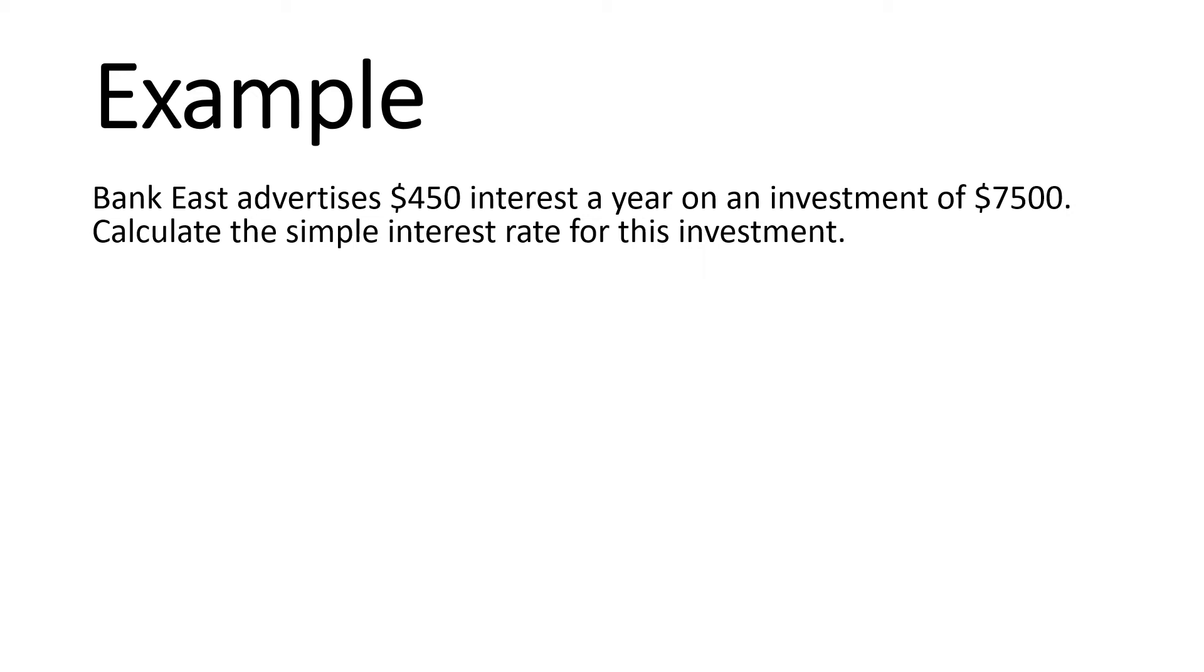These type of questions, it's really important that you write down your formula and then what you know. Our formula is I equals PRN. We know I equals $450, P for principal equals $7,500, we're not told what the interest rate is so R equals a question mark, and it's for one year so N equals 1.